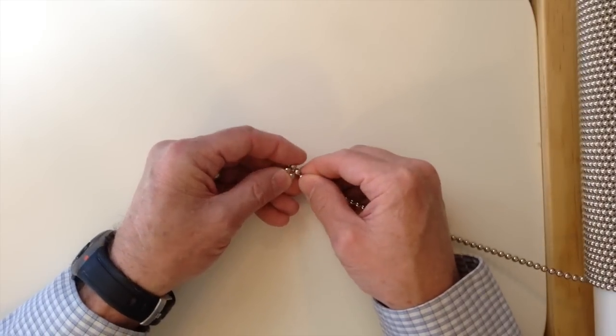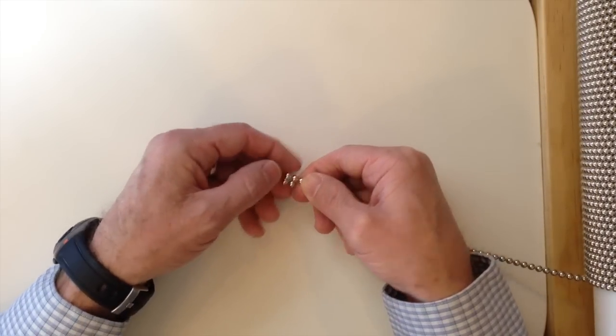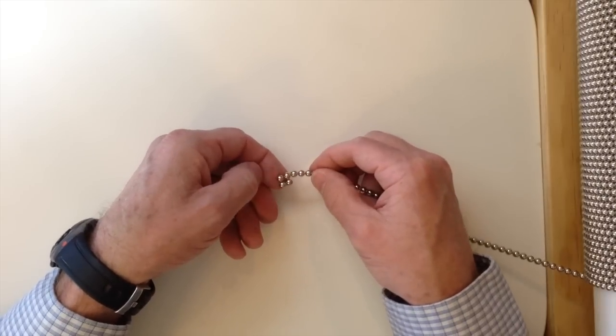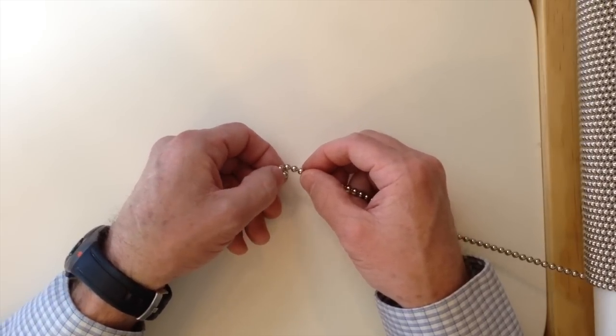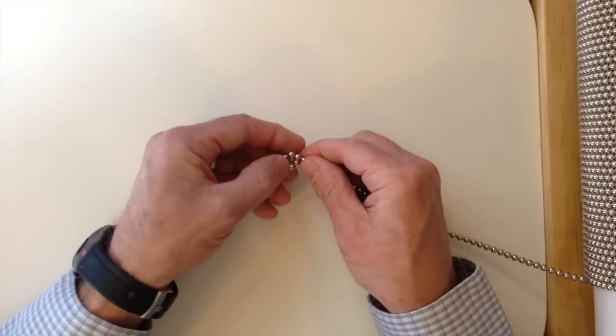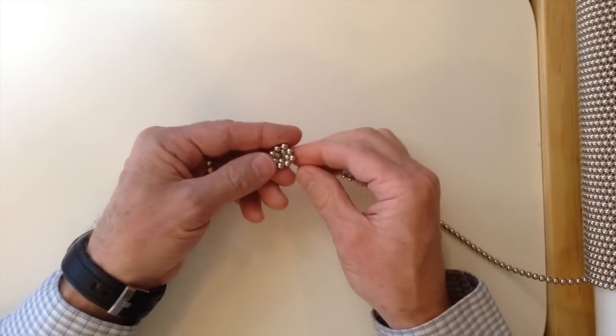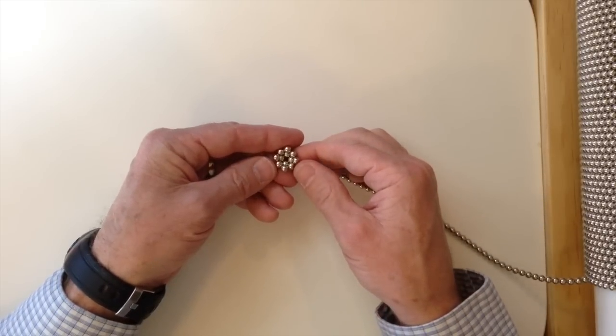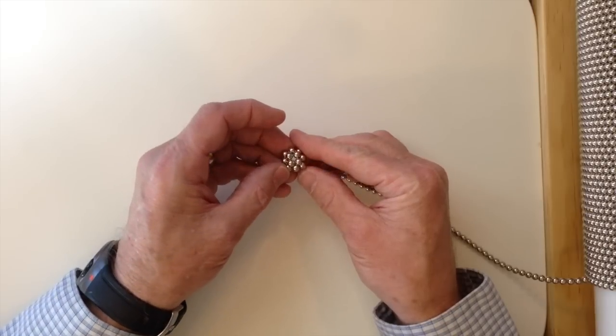The way you start off is you make a square with four magnets, like that, and then add a ring of eight magnets around this to form a bowl shape. So that's the eight magnets that we've added and you can see it forms a kind of a bowl.